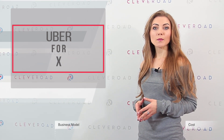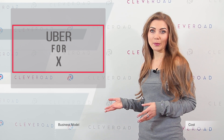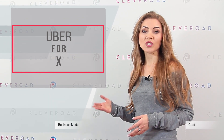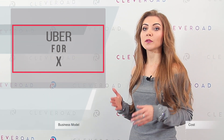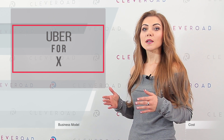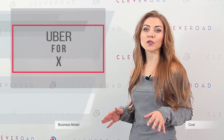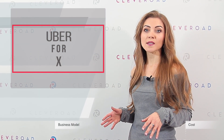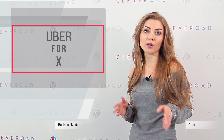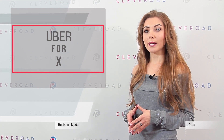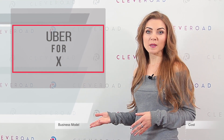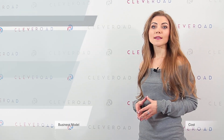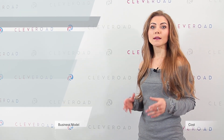Uber's business model adheres to three main principles. Customers receive their required offline service just after online ordering. Service providers are free to choose whether they will provide the service to that particular customer or decline the request. Two separate mobile apps for the service provider and consumer are supposed to be used.